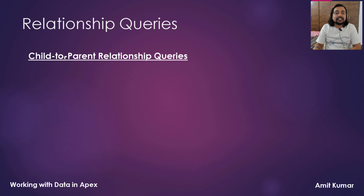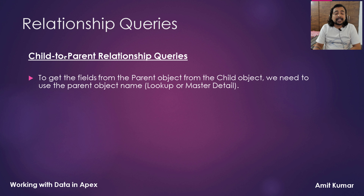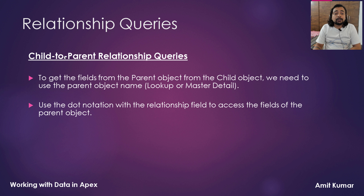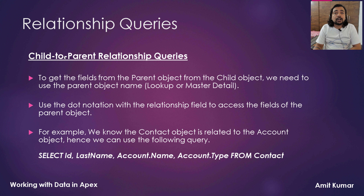Let's talk about child to parent relationship query. To get the fields of the parent object from the child object, we need to use the parent object name, which is the lookup or master detail field existing in the child object. Use dot notation with the relationship field to access the field of the parent object. For example, we know the contact object is related to the account object, hence we can use the following query.